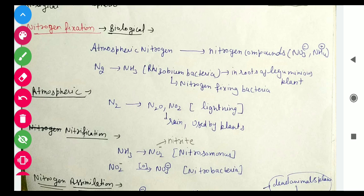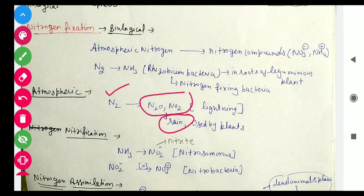So in atmospheric nitrogen fixation, nitrogen from the atmosphere is converted into nitrogenous compounds through lightning. These compounds come down through rain into the soil, and then plants use them from the soil. When we take food from plants, we get that nitrogen. That completes the atmospheric nitrogen fixation process.